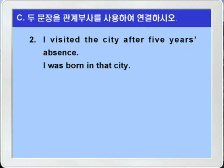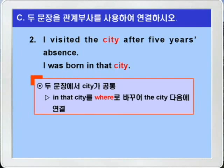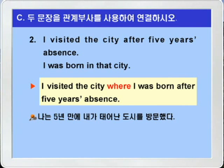2번. 'I visited the city after five years' absence. I was born in that city.' absence가 부재 이런 뜻이니까 나는 5년 만에 그 도시를 방문했다, 이런 말이죠. 나는 그 도시에서 태어났다. 두 문장에서 공통되는 것이 city죠. 따라서 윗 문장의 city를 선행사로 하고 아랫 문장의 in that city를 장소의 관계부사인 where로 만들어서 선행사인 the city에다 연결시키면 되겠습니다. 'I visited the city where I was born after five years' absence.' — 나는 5년 만에 내가 태어난 도시를 방문했다.